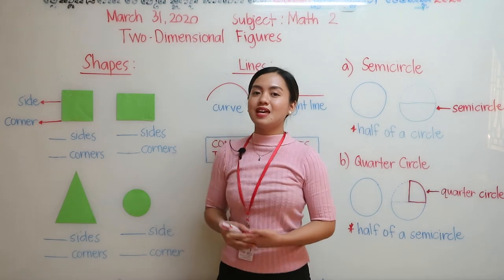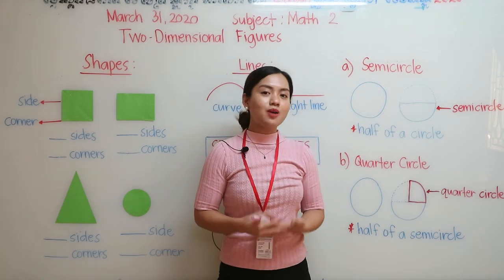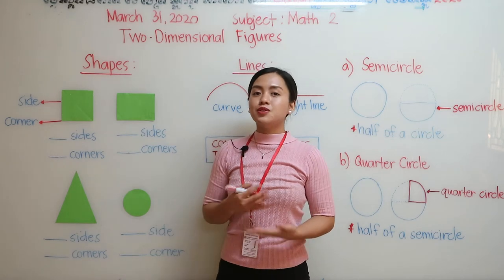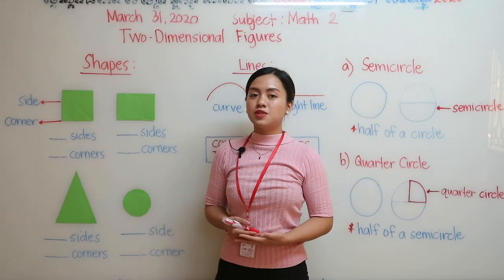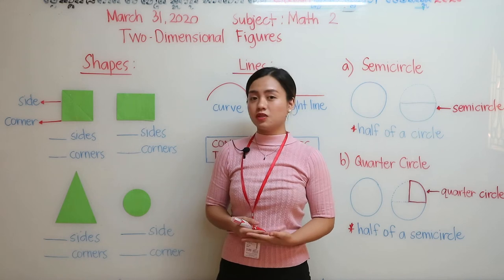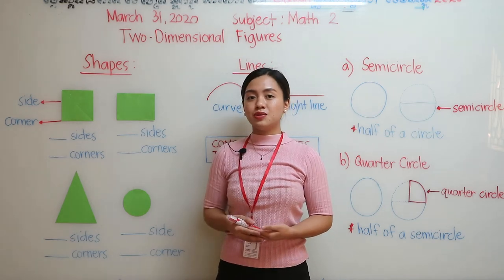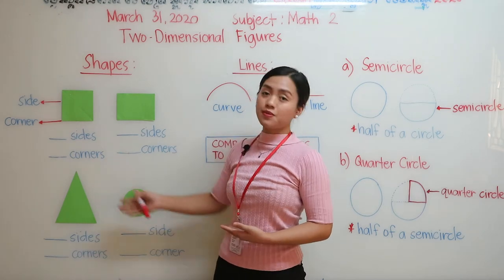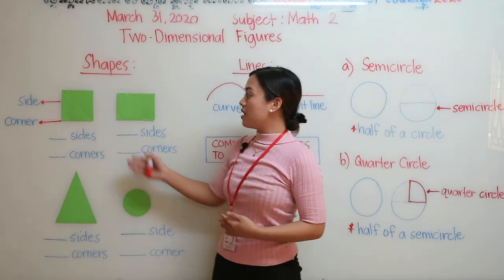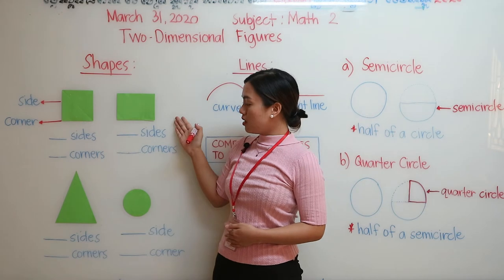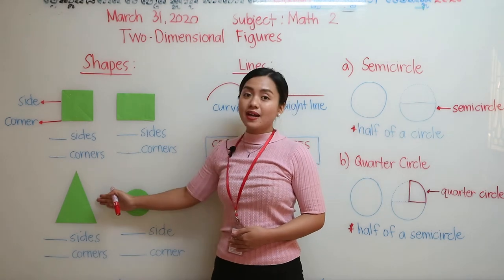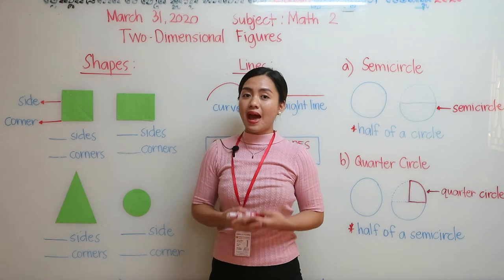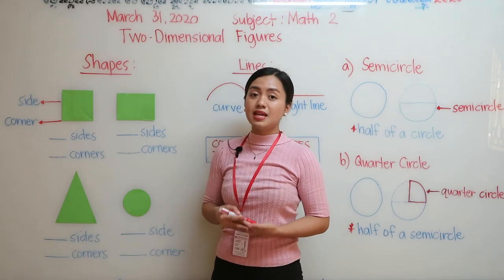Good afternoon students. Today we are going to talk about two-dimensional figures. Two-dimensional figures are shapes that are flat plane figures, or they only have two dimensions such as width and height. We have here the basic shapes: square, rectangle, triangle, and circle. Shapes also have corners and sides.